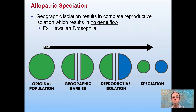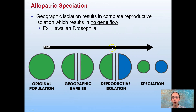Let's start with the first one: allopatric speciation. This is a result of a geographic isolation or a geographic barrier that results in complete reproductive isolation and creates no gene flow. We have this very predominant physical structure — it could be a mountain range, for example — causing reproductive isolation and causing different species because of no gene flow crossing between these. We have the green and blue species developing completely separate from one another with no gene flow interacting between those two.